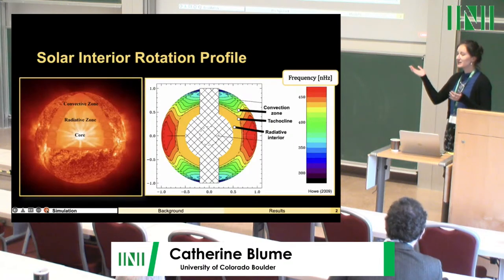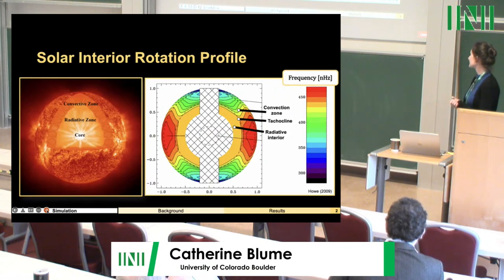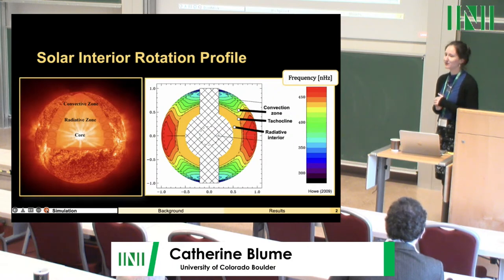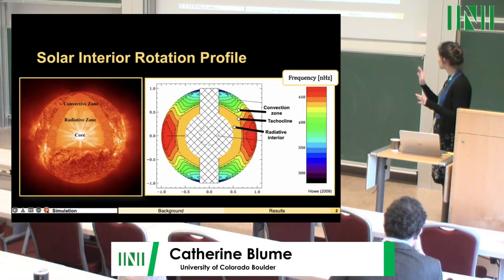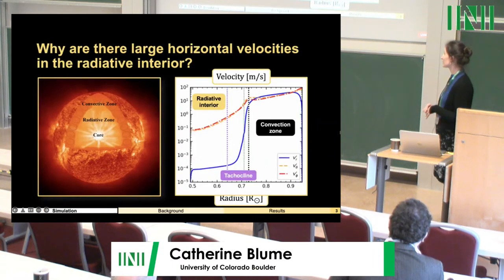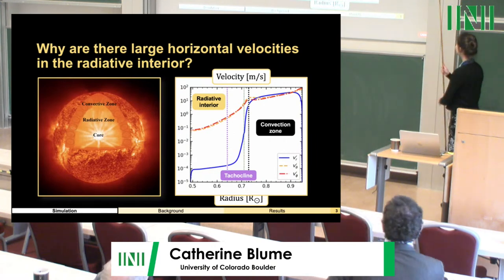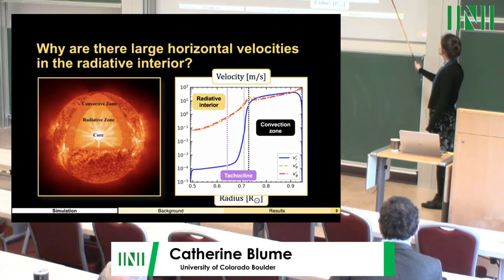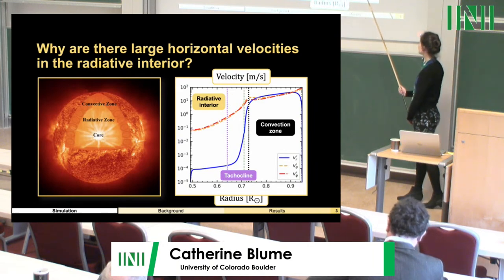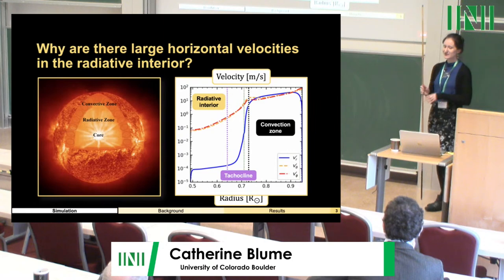We've all seen a version of this plot many times this week. The sun has a differentially rotating interior. The convection zone rotates faster at the equator than at the poles, while the radiative interior rotates more or less like a solid body, and the tachycline is the shear layer in between. Something Lauren mentioned in his talk this morning is that he saw in his simulation high horizontal velocities in the radiative interior. VR, the blue line, decreases rapidly in the tachycline and is rather low in the radiative interior, which you expect because there isn't convection happening. Whereas V theta and V phi, the orange and red lines, remain high compared to VR in the radiative interior, and the question is why?